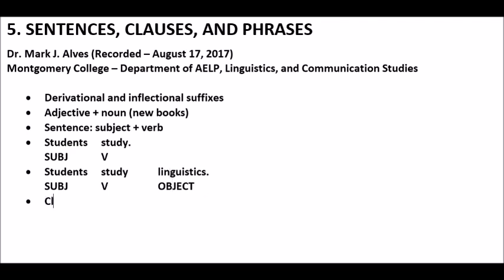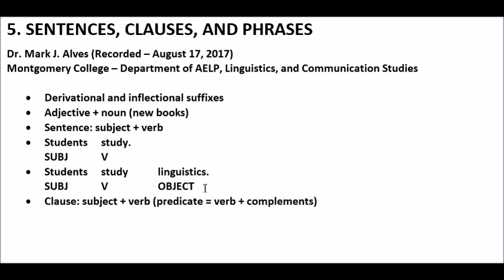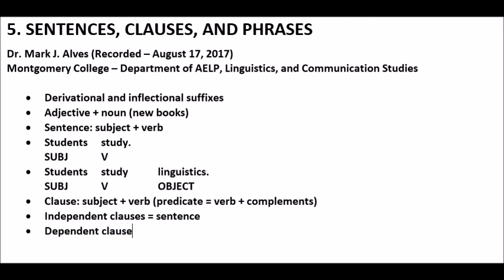Now let's talk about clauses. A clause has the same basic requirement as a sentence — it must have a subject and a verb. Sometimes we use the term predicate, which is a verb plus other complements, meaning any kind of nouns or other things that might go after it. The difference between a clause and a sentence is that a sentence is always a complete idea, while clauses can either be independent clauses, which equal a sentence, or dependent clauses, which are not a complete idea even though they still have a subject and verb.